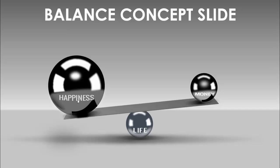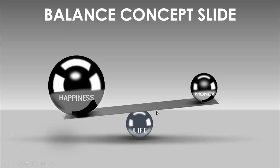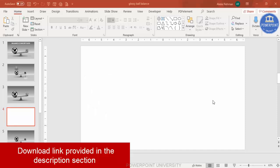The happiness ball is bigger compared to the money one, so you can do a lot of different ideas with this particular concept. I also have one more slide where I've used option A and option B — instead of the oval shape I've used a triangle. You can do a lot of things with this concept. Let's see how to do this in PowerPoint.